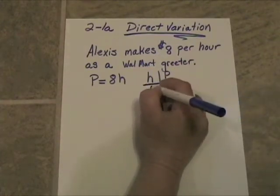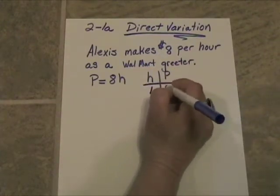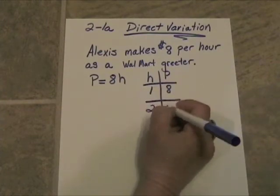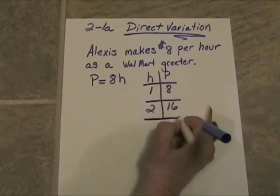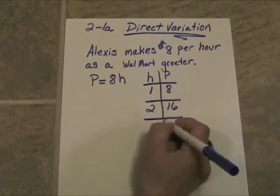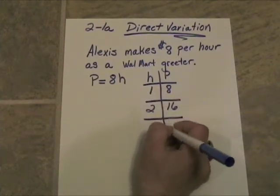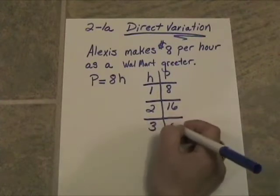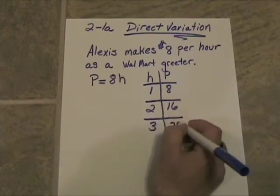Alright, if she works one hour, she's going to make $8. She works two hours, she's going to make $16. And if she works three hours, she's going to make $24.